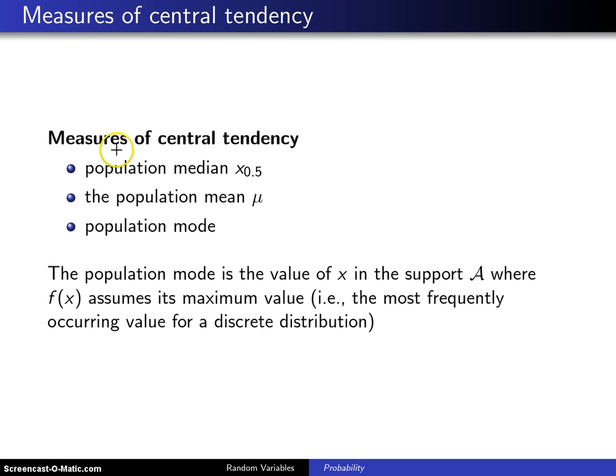But there are two other measures of central tendency, namely the population median and the population mode. The population median we have seen before, it is a measure of central tendency that's a special case of a percentile, and it is denoted by x with the subscript 0.5.